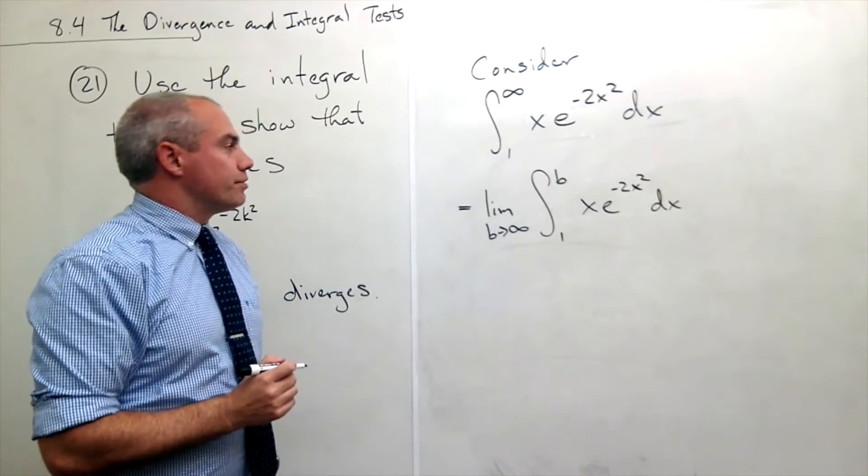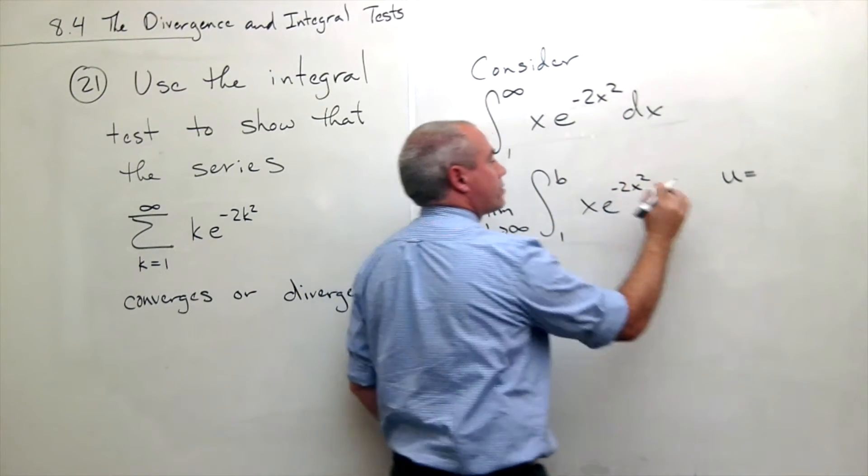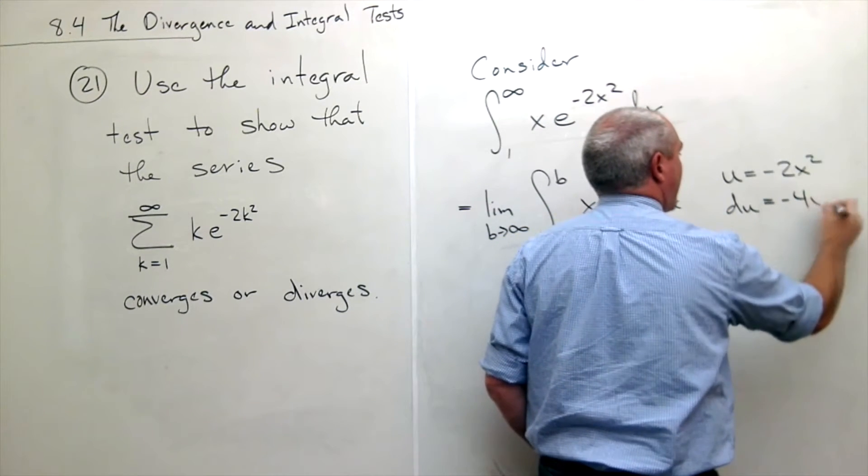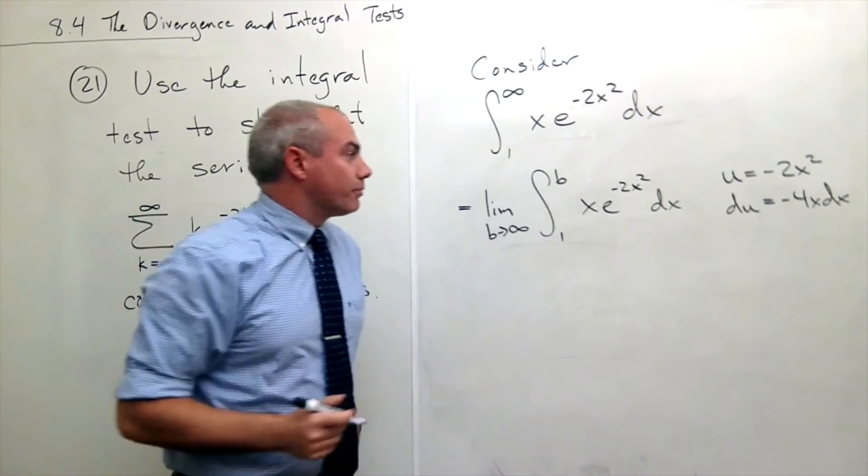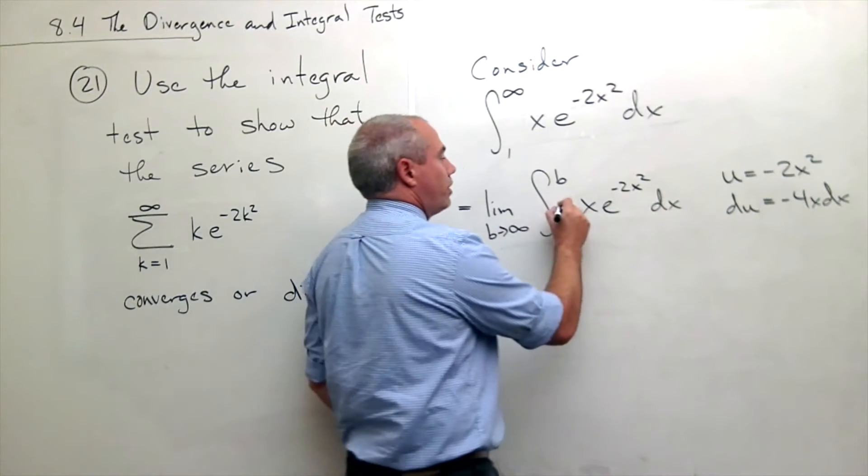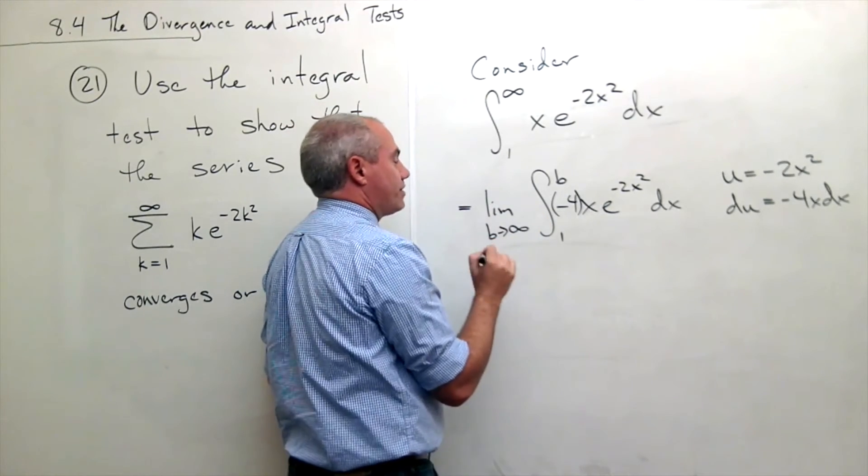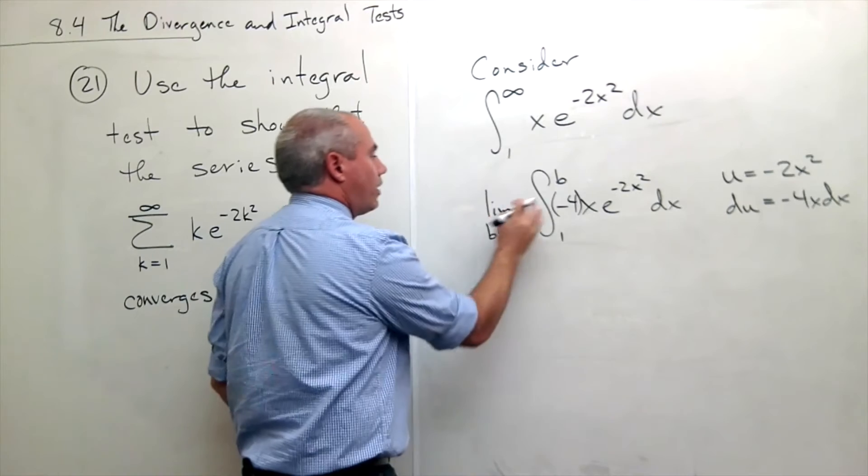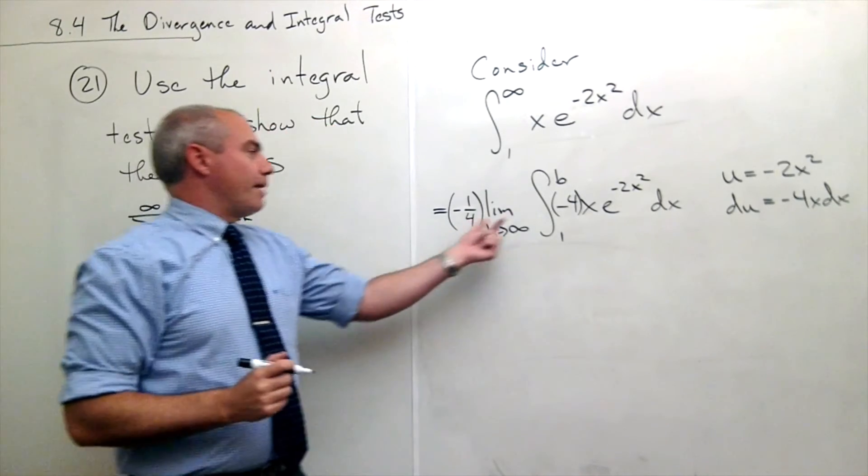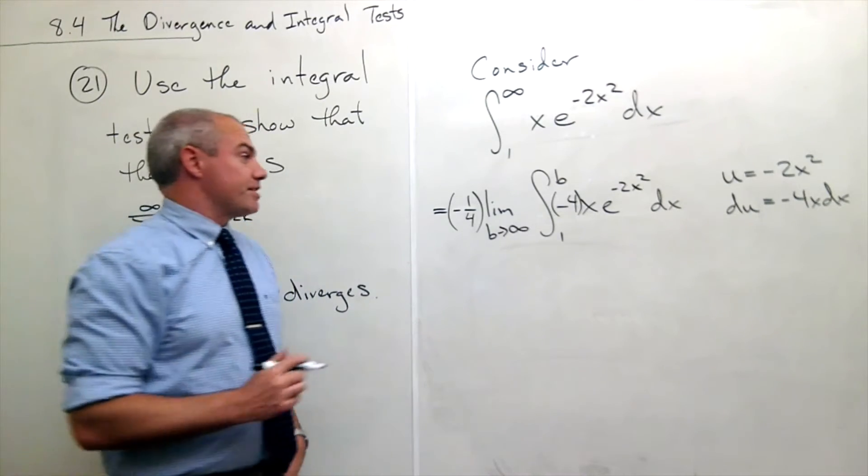I can make a u substitution here. I'll let u equal negative 2x squared. So du will be negative 4x dx. I'm close here. I have an x dx; I don't have a negative 4x dx. So I'm going to put in a minus 4 right here, which means I need a negative 1 fourth outside of the integral. I can put that all the way outside of the limit as well. So I put in this negative 4, I put in this negative 1 fourth, and now I'm ready to make my substitution.